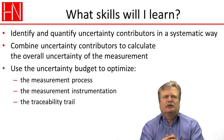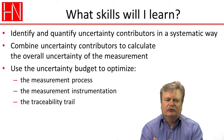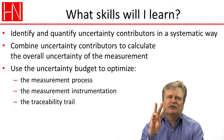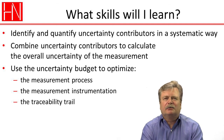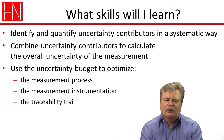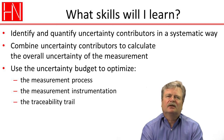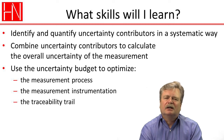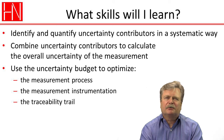That's the end of it. When you've gone through this course, you should have learned to identify and quantify uncertainty contributors in a systematic way that helps you find those big three contributors needed to get an uncertainty budget that is as correct as it needs to be. You will learn how to combine the uncertainty contributors to calculate the overall uncertainty of the measurement, and how to use the uncertainty budget to optimize the measuring process itself — the measurement instrumentation, what equipment you're using, and what I call the traceability trail: what you're calibrating, what tolerances you calibrate to, and how often. Thank you.